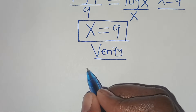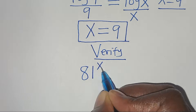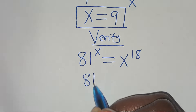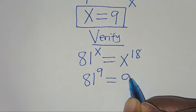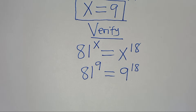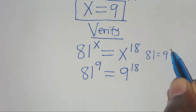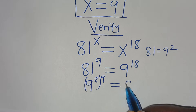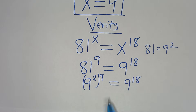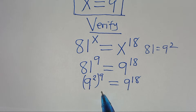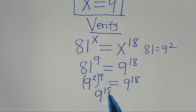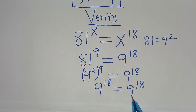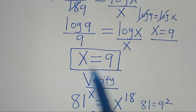If you recall, we have 81 to the power of x equals x to the power of 18. Substituting x equals 9, we have 81 to the power of 9, this is equal to 9 to the power of 18. Now we can express 81 as 9 squared, so we have 9 squared raised to the power of 9, equals 9 to the power of 18. And 9 squared raised to the power of 9 is the same thing as 9 to the power of 9 times 2, which is 18, equals 9 to the power of 18. So clearly, the left hand side is equal to the right hand side, and this affirms that the value of x, which is 9, satisfies the equation.